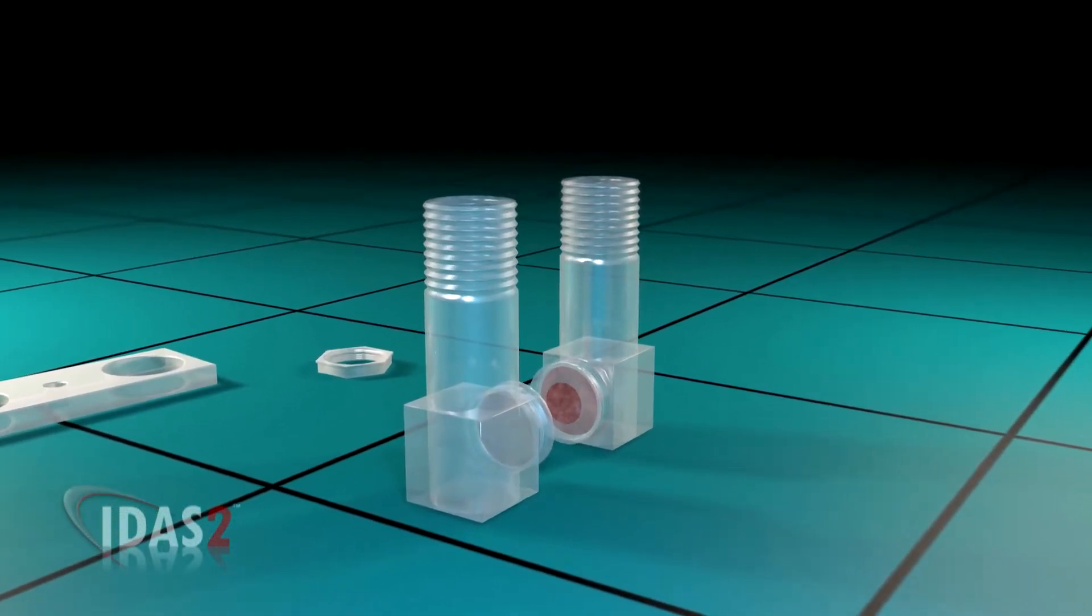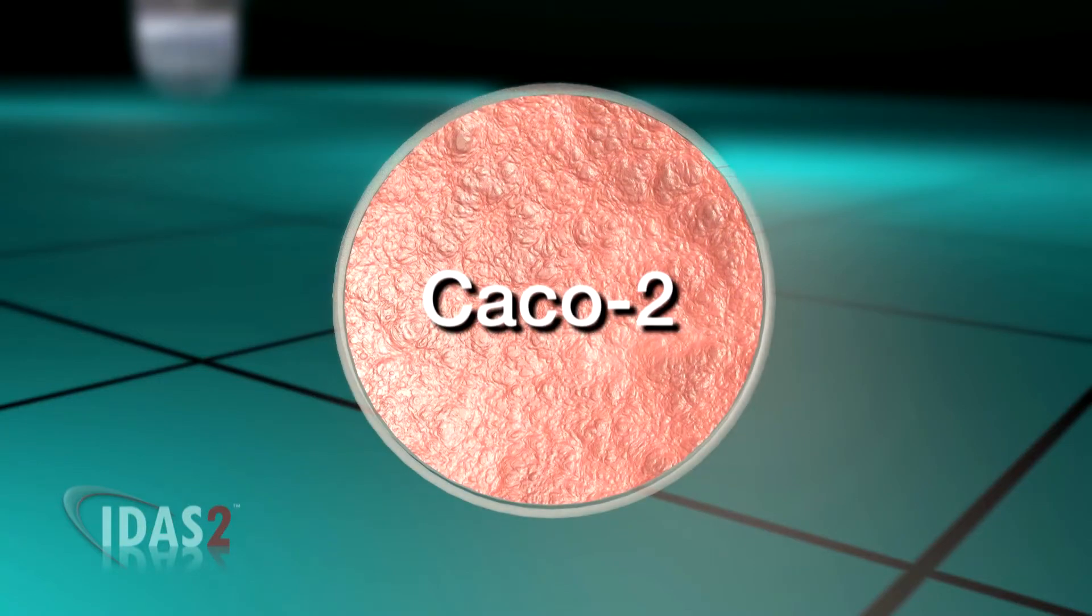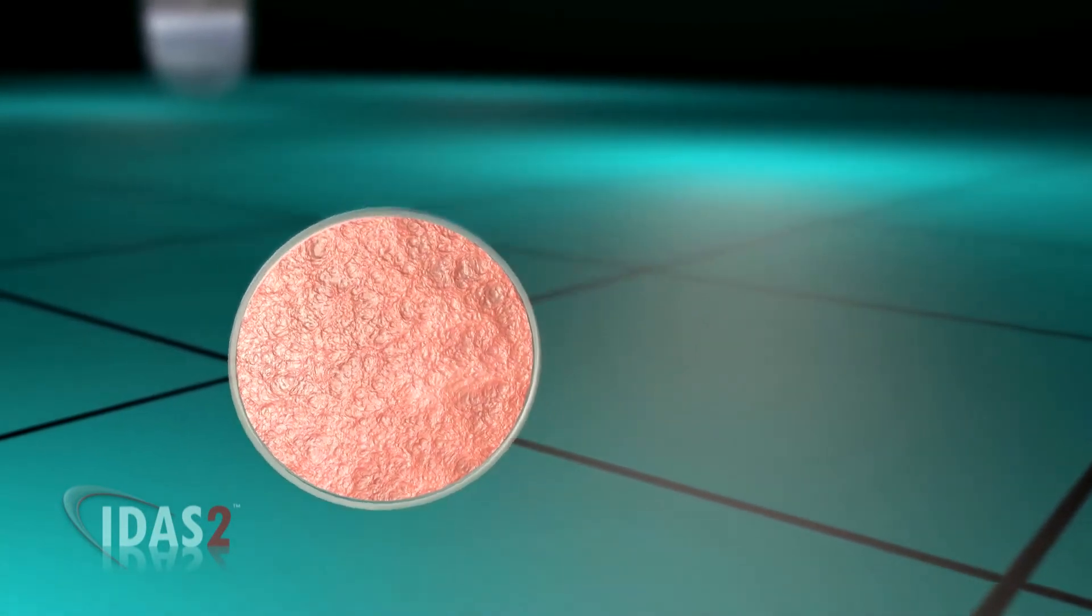IDAS2 uses two L-shaped chambers to which a membrane coated with living human intestinal cells such as Caco-2 cells is affixed.